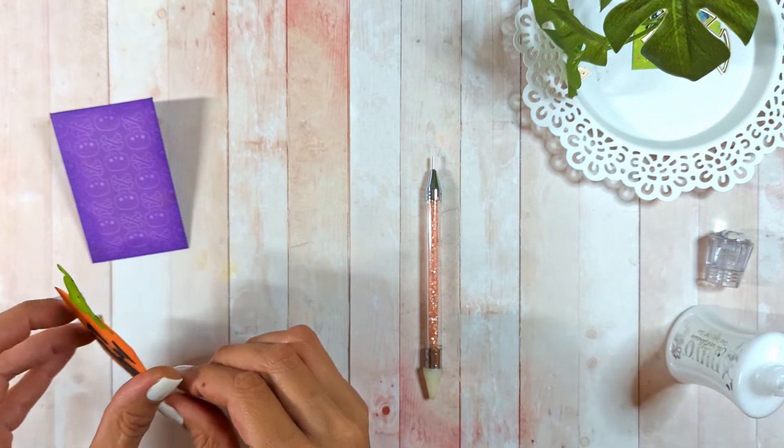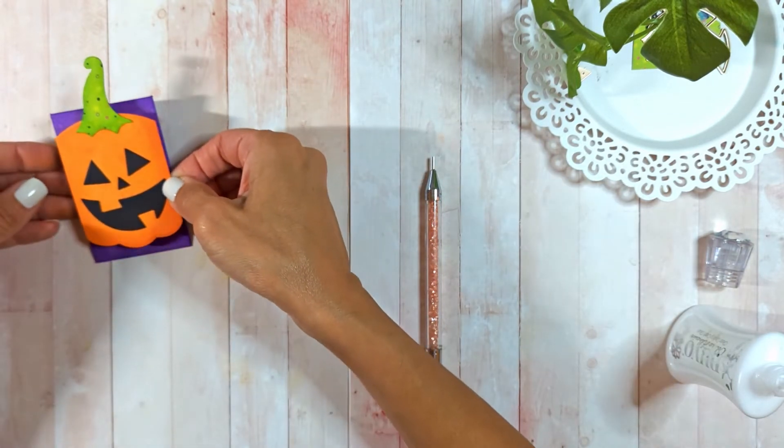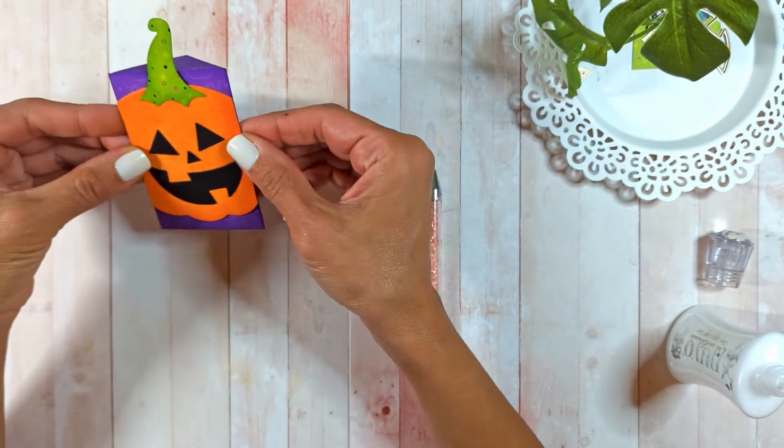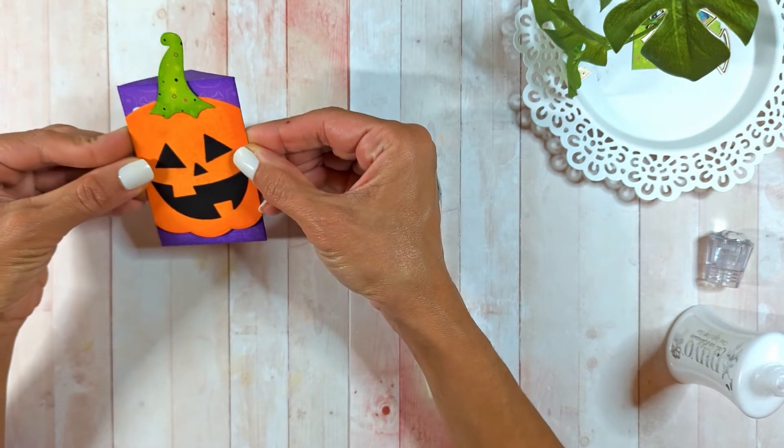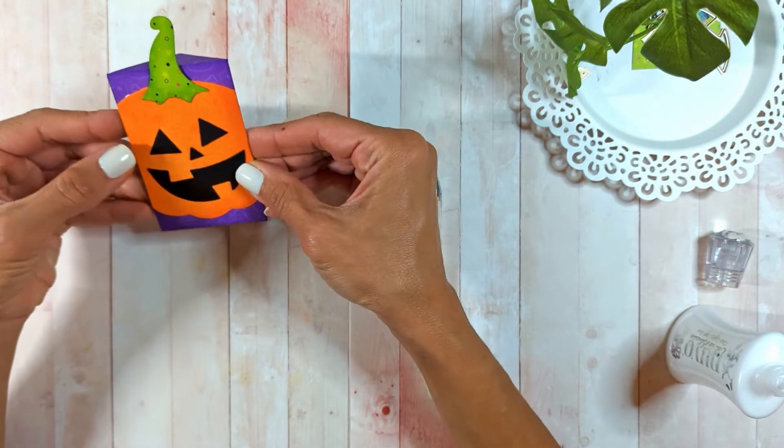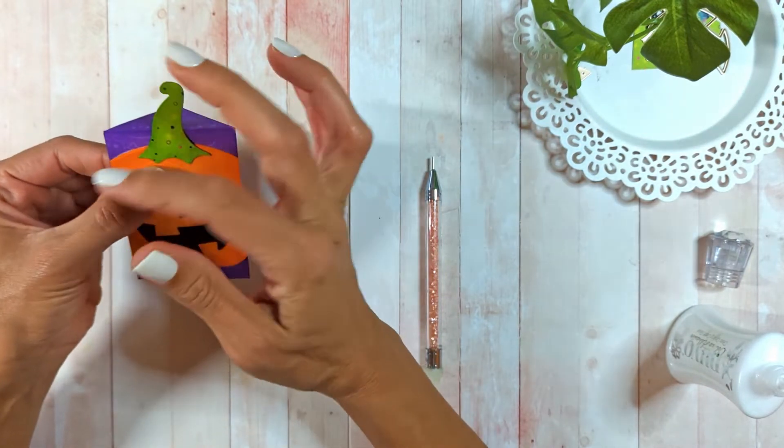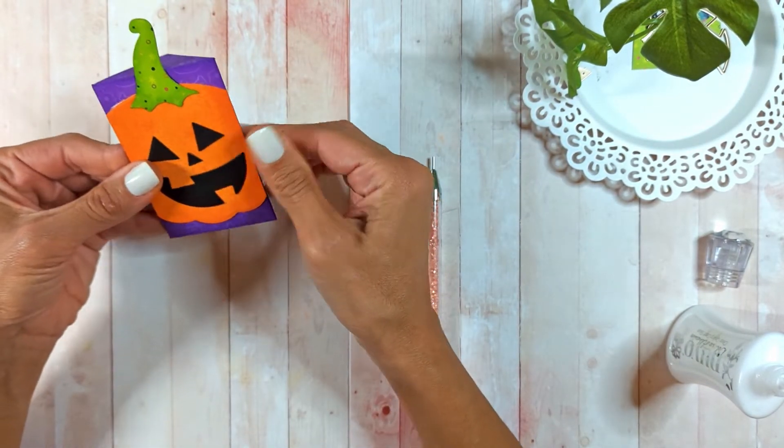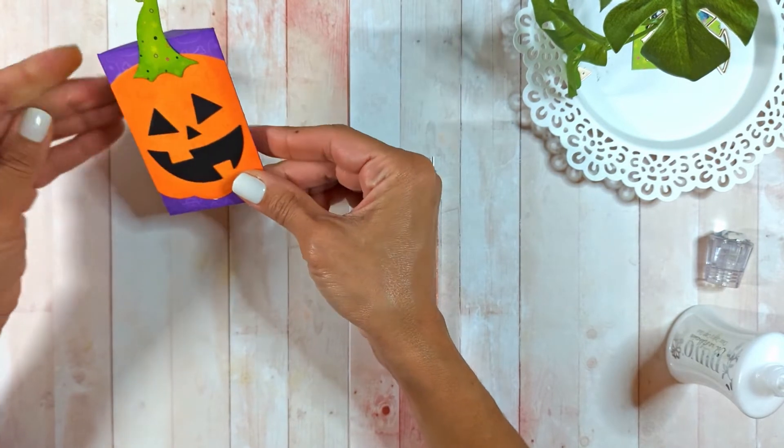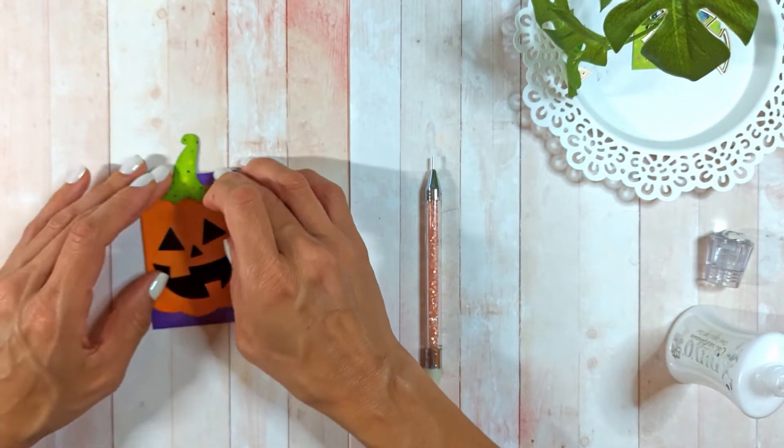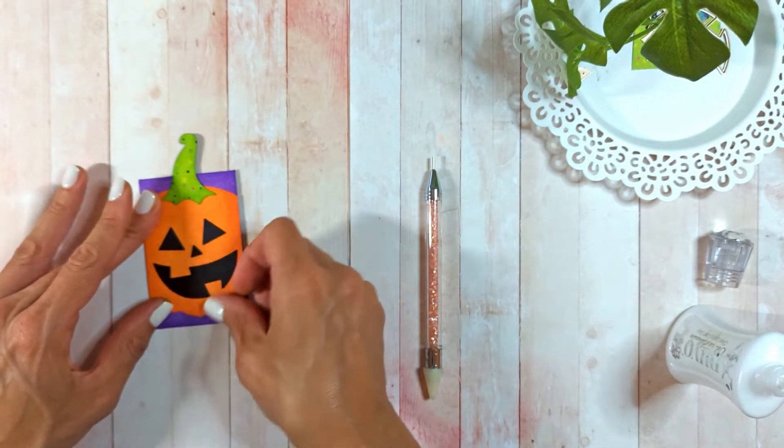I'm going to directly glue my pumpkin on the gift card holder. If it wasn't supposed to be inside the card, maybe I would add foam tape behind the pumpkin so it's raised from the envelope. But because this is going inside the card, I don't want too much dimension.